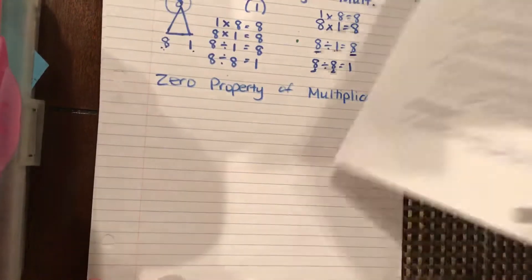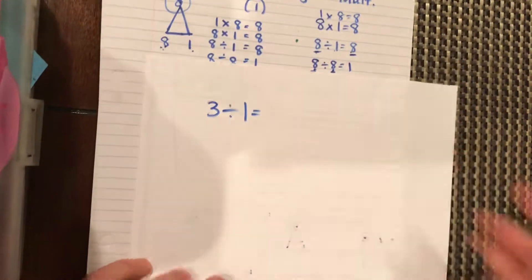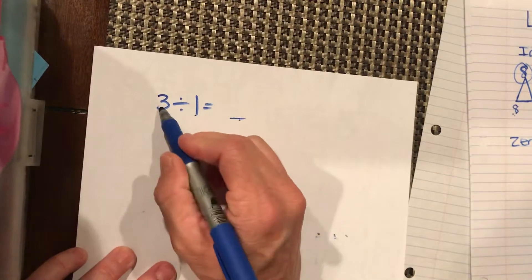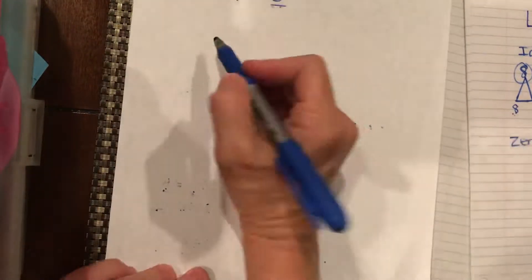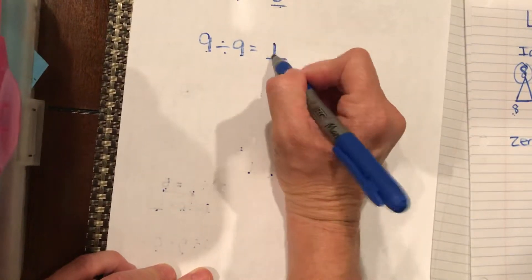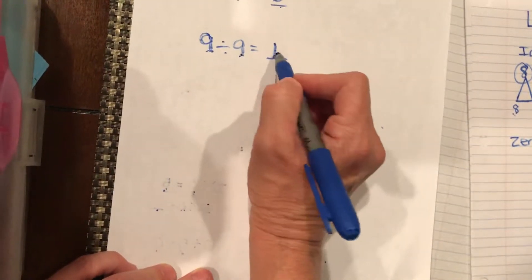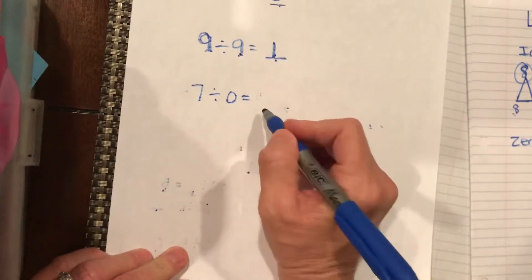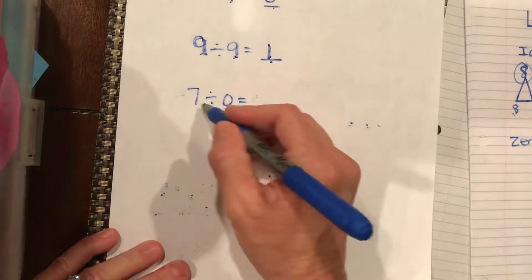Let's take a look at the answers. 3 divided by 1: what number times 1 equals 3? Should be 3. 9 divided by 9: what number times 9 equals 9? Should be 1 — 1 times 9 equals 9. Think about it: you have 9 items split into 9 equal groups, there should be 1 in each group. 7 divided by 0: what number times 0 is going to equal 7? Absolutely nothing — it doesn't work.